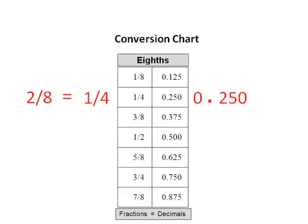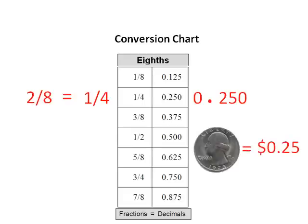If you think of this in terms of money, one quarter of a dollar is 25 cents. We understand the relationship of 25 pennies to one dollar, which has 100 pennies. In decimal terms, this is 25 hundredths.